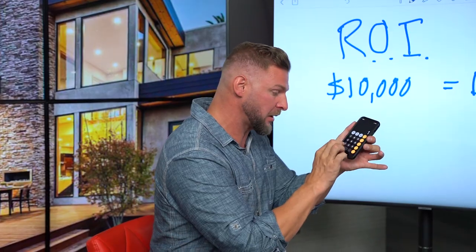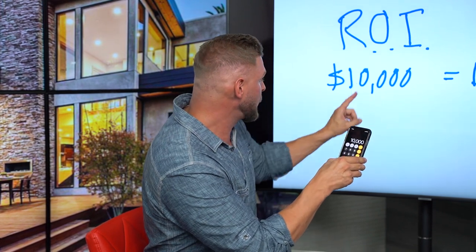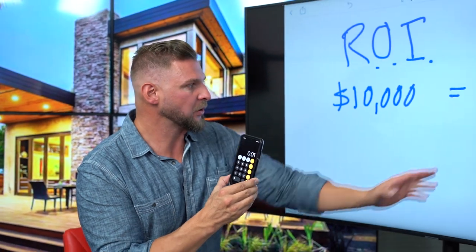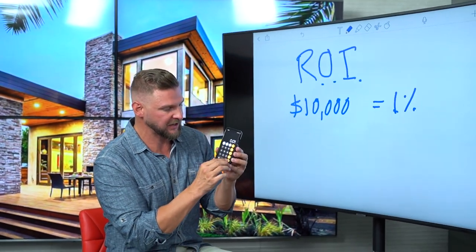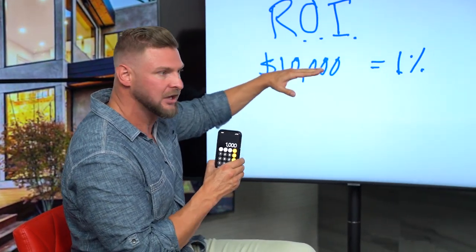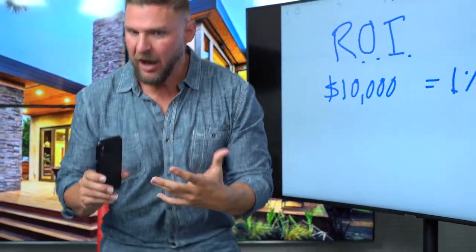Pull out a calculator and do this with me. Put in 10,000 and multiply it by .01 — because when multiplying a percent you move it to the hundredth place, so .01 means 1%. What do you get? A hundred bucks. I put $10,000 out and at the end of the year I'm getting $100 back — that's a horrible investment. Now let's say we're getting back 10%: $10,000 multiplied by .1 equals $1,000. That is a better ROI.